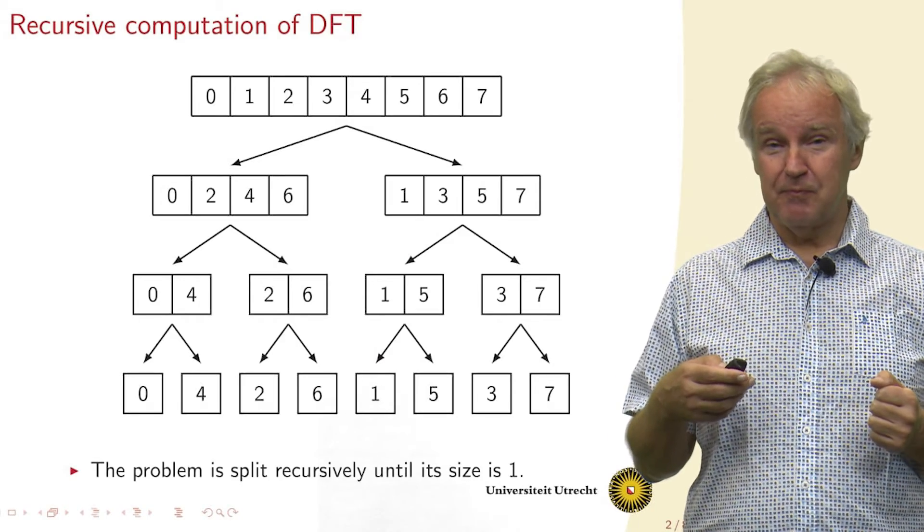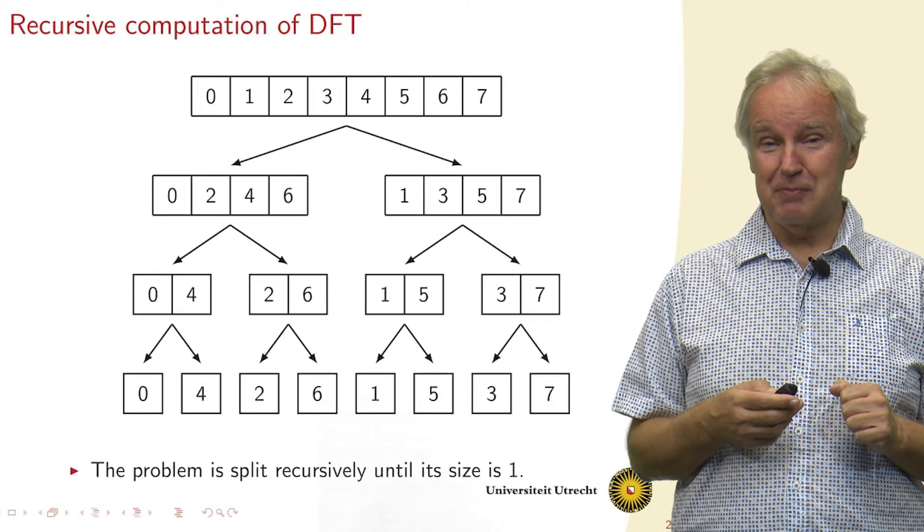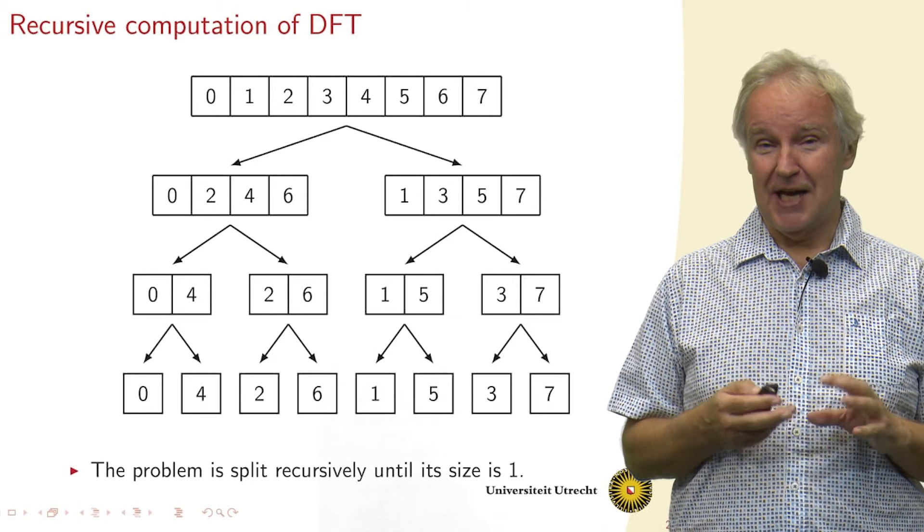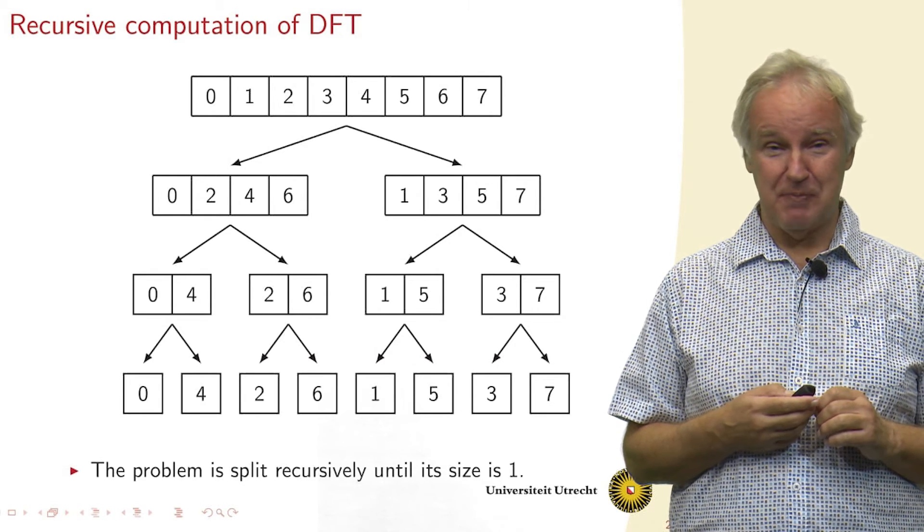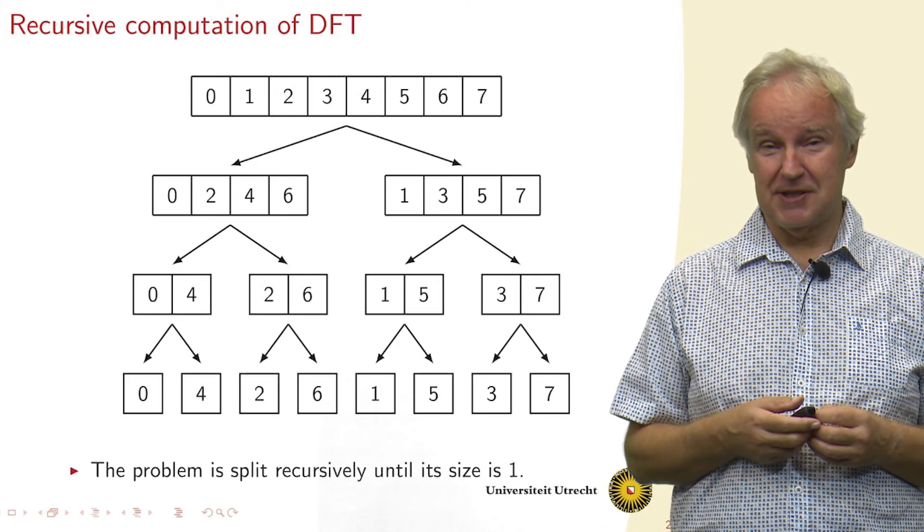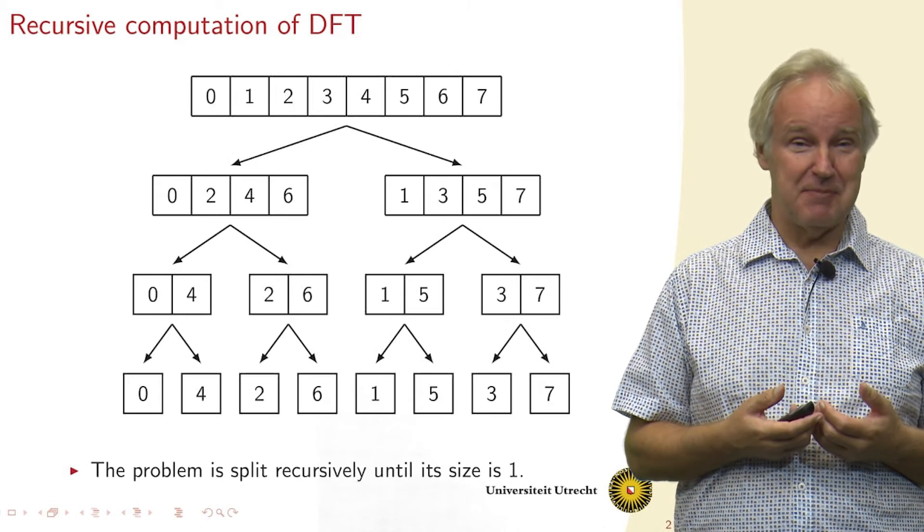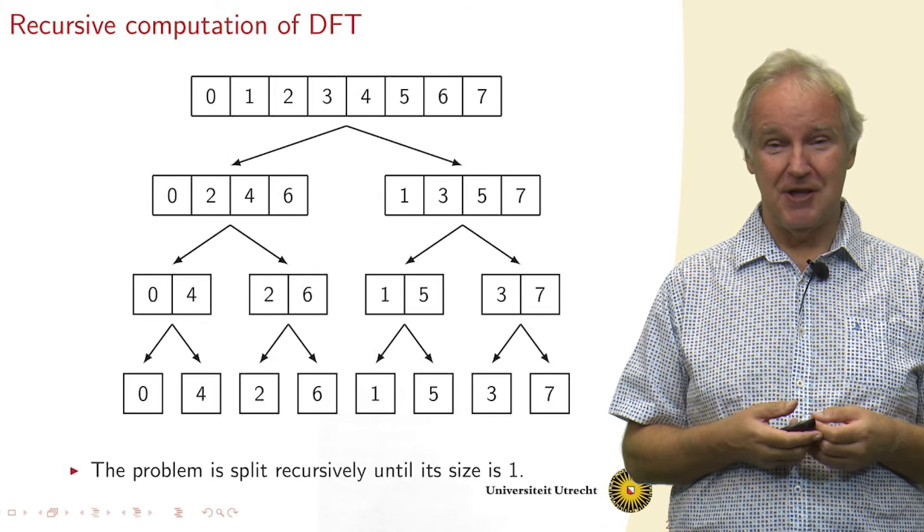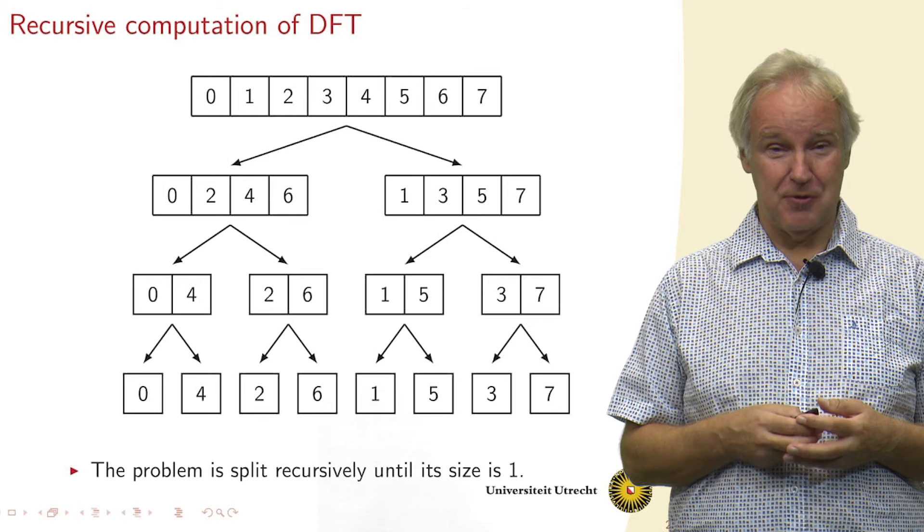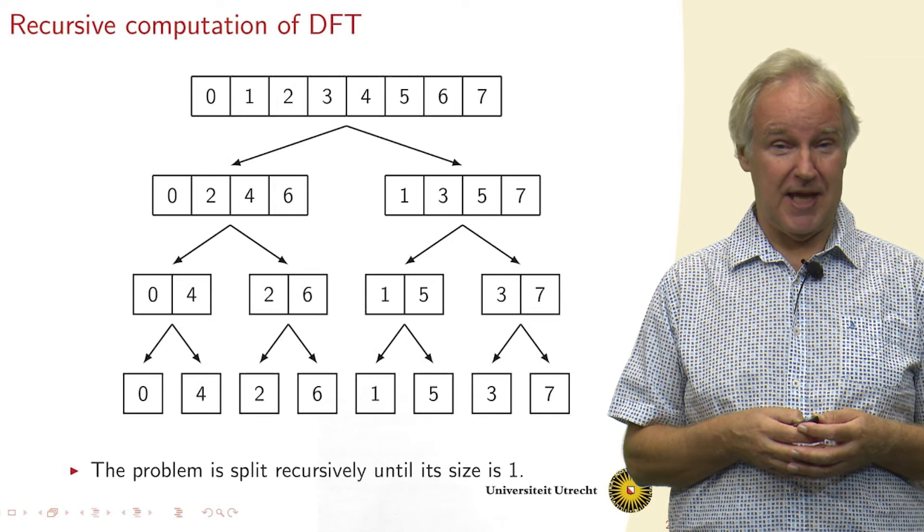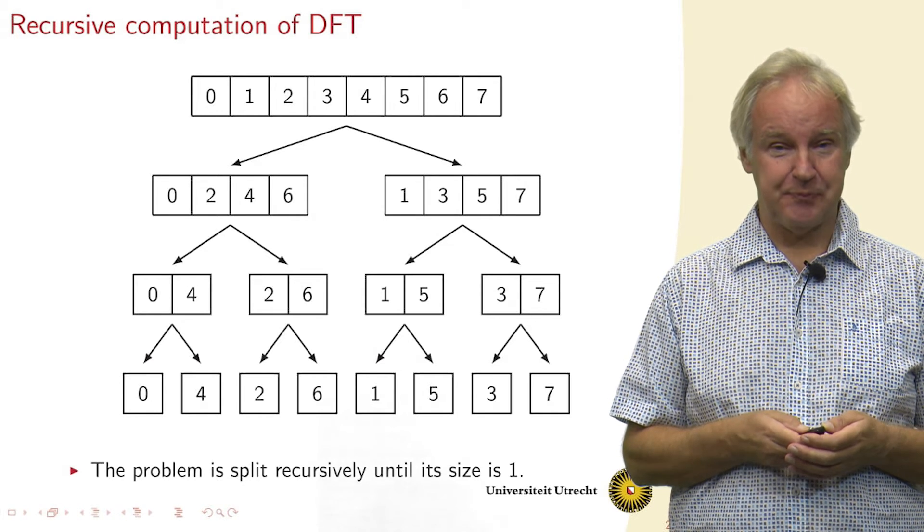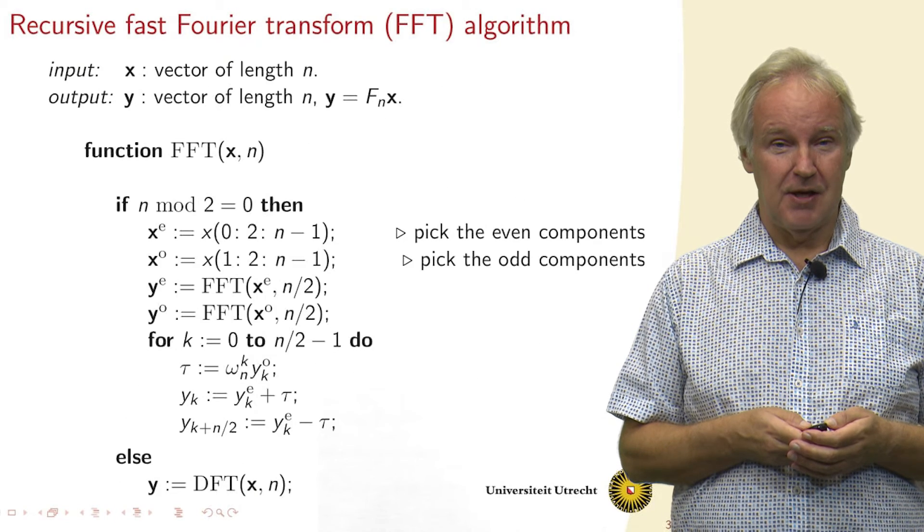As we've just seen, we pick out the even components of a vector and the odd components, and we perform a Fourier transform of half the size on both of these parts. And then we do the same again on the smaller parts until, at the end, we get to a vector that has length 1, and we don't have to do anything basically.